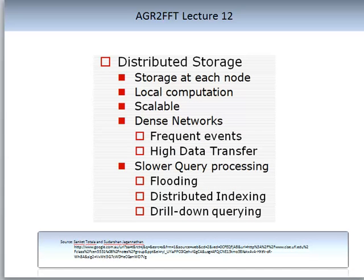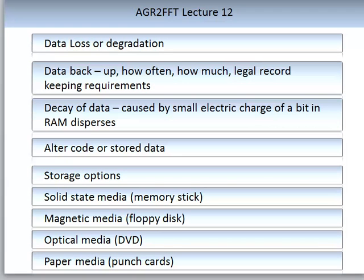Distributed storage facilities may also be present — storage at each node, local computation, scalability, and dense networks. In dense networks there will be frequent events and high data transfer, slower query processing, flooding (where all information comes in at once), distributed indexing, and what is called drill-down querying that sets a hierarchy in how data is processed. Some sensing systems do not have a requirement to store data long-term, but when data storage is required for optimal system operation or legal requirements, you need to consider data loss or degradation.